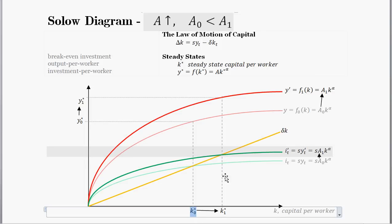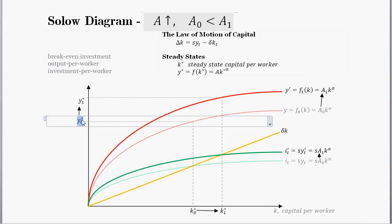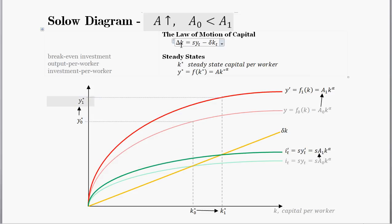The new steady-state value of capital per worker is K-star-sub-naught (new), and where before we had output per person associated with the old K-star, we now have a new steady-state value of output per person, Y-star (new). But keep in mind these things aren't instantaneous. Even though the steady-state values have changed instantaneously, capital evolves through the law of motion of capital — the capital accumulation equation. So even though the steady-state value of capital per worker has increased, the capital stock is going to take some time to get up to the new level.